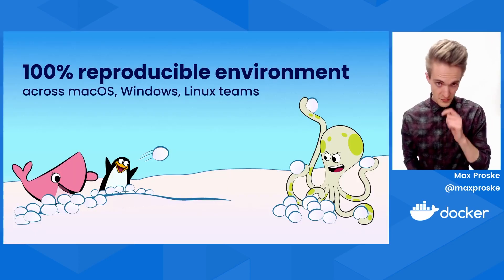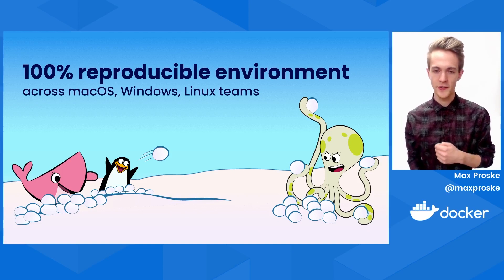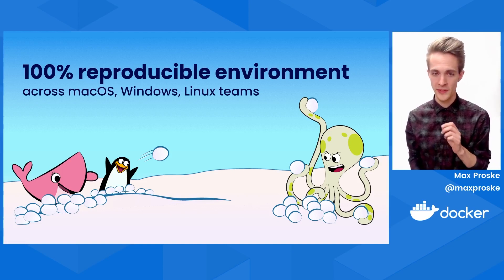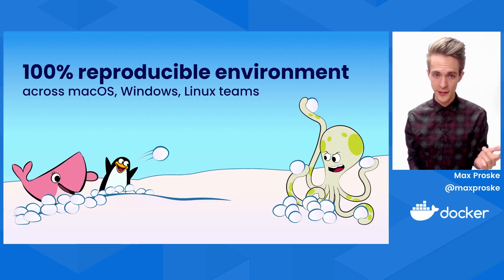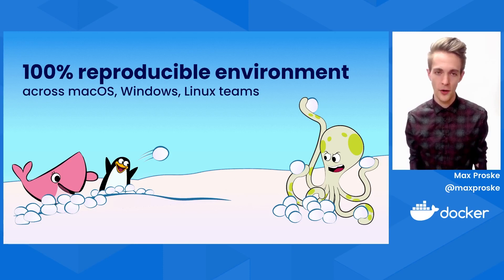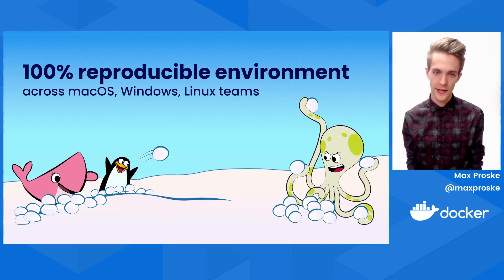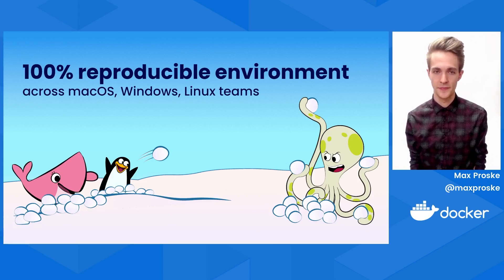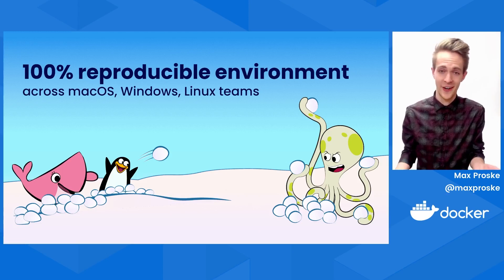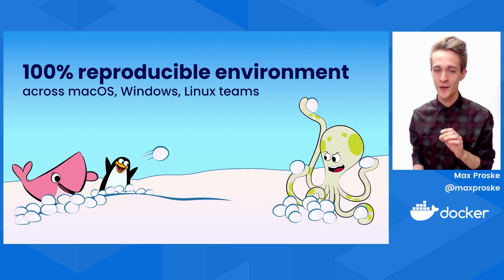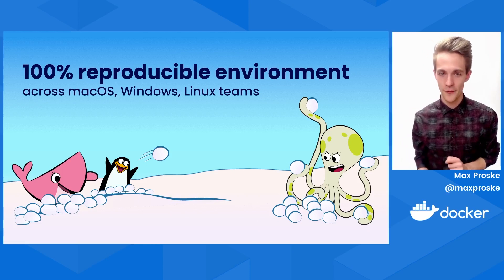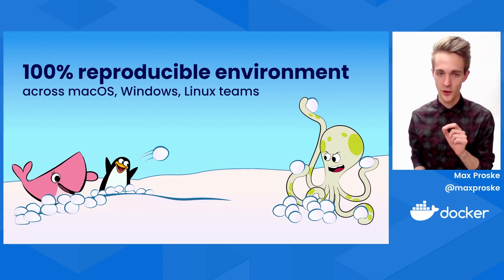To the uninitiated, Docker allows you to write recipes to spin up a 100% reproducible dev and production environment every time. This means you can develop consistently across Mac Intel, Mac Silicon, Windows, and Linux teams without worrying about what version of Node or config files each developer has installed on their machine, or what's installed on the server for that matter. One of my favorite parts about Docker is you can target your exact production environment on everyone's local machine, no matter how specific or crazy.